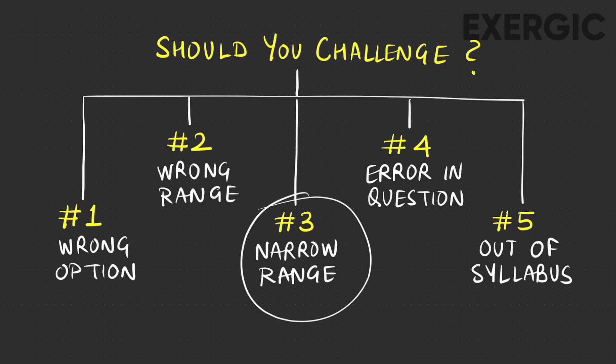The important case is situation number 3 — the narrow range in a NAT question — which is the most controversial and most debated one. If two students follow the same concepts and steps, they may still not get the exact same answer due to rounding or approximation errors. Someone may get 100, someone may get 99.8 or 99.9. I will now explain when you can challenge in such situations.